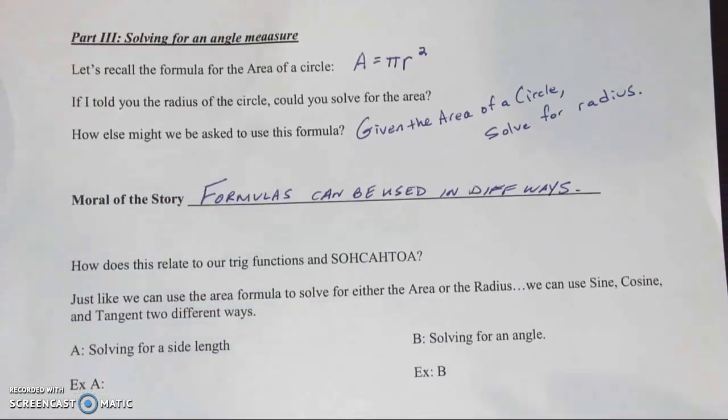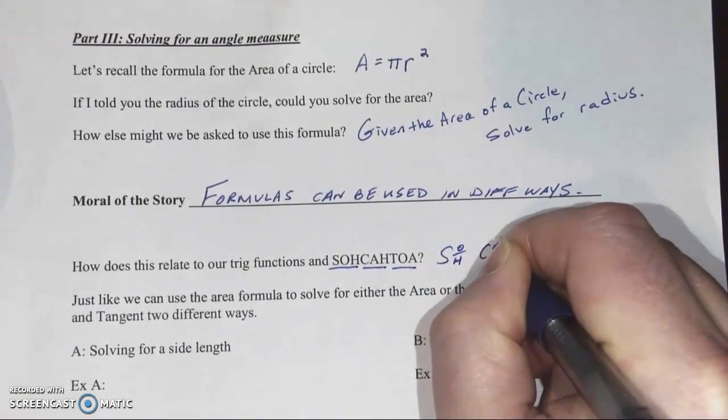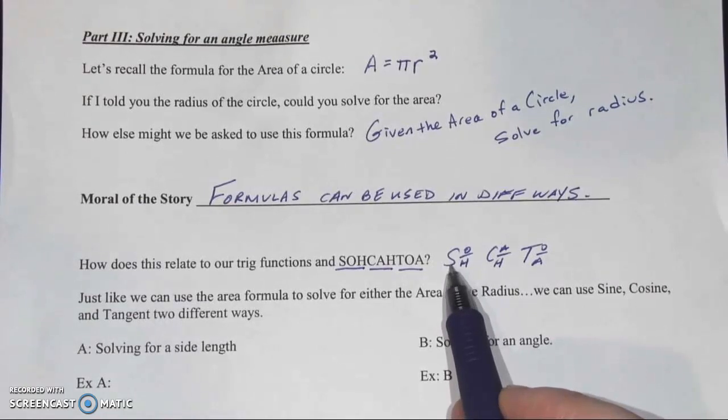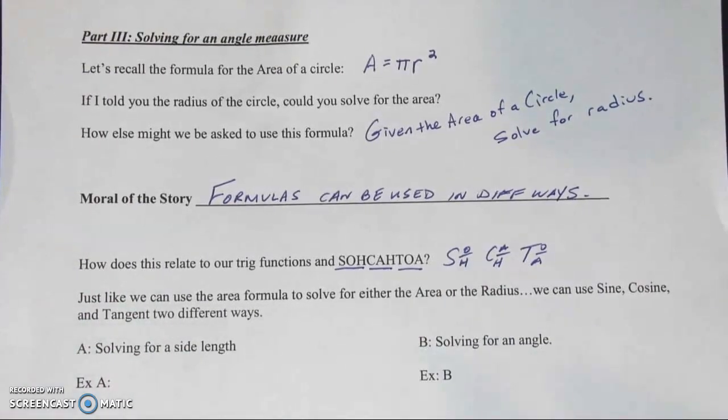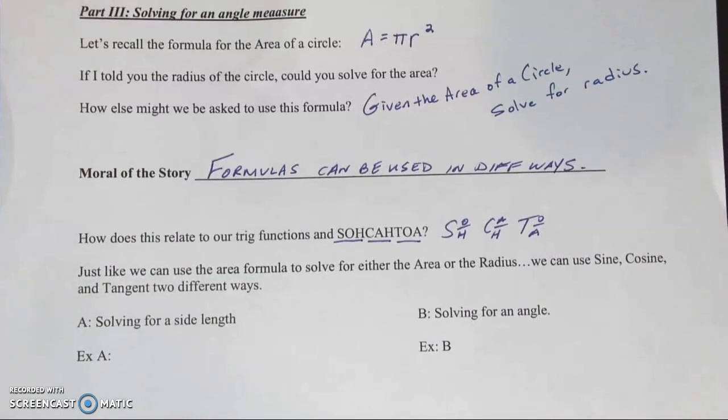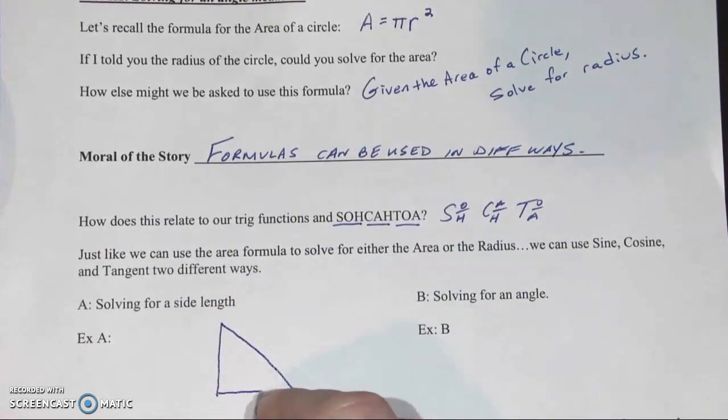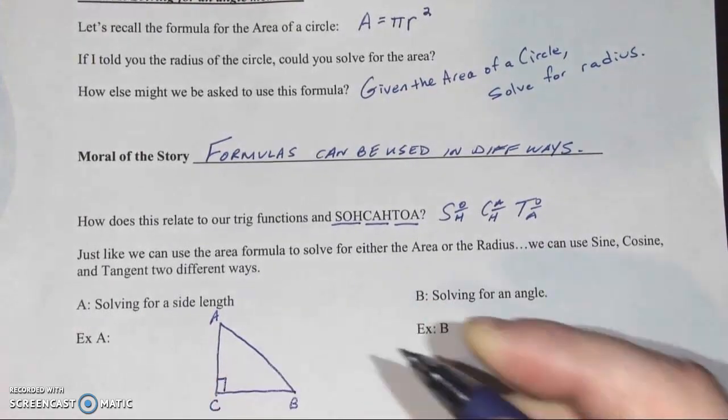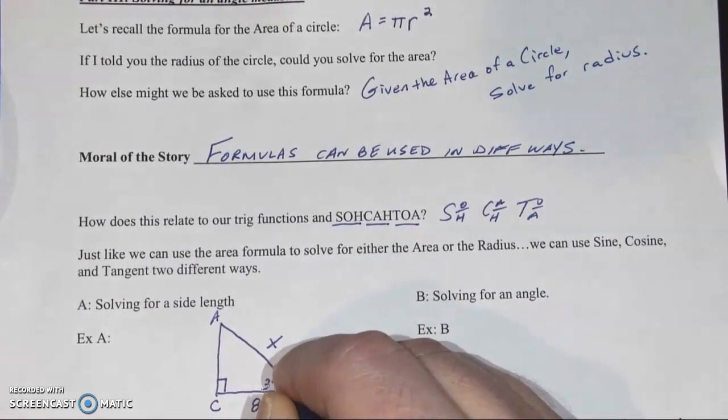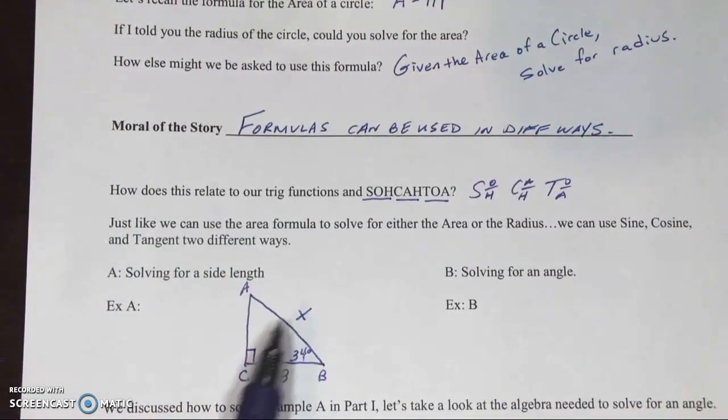How does this relate to SOHCAHTOA? Well, each one of these three, those sets of three are SOHCAHTOA. Each one of these, in theory, is a formula. The value of sine is the opposite leg over the hypotenuse. That's a formula. Same with cosine, same with tangent. If you want to think of it as the forwards way or the normal way, we taught you in part two, we're solving for a side length. Let's take a look at that. We'll just create a little right triangle here. And we'll call it maybe A, B, and C. We'll put a right angle there. And maybe we'll do this side would be 8, this side would be X, and this side would be 34 degrees.